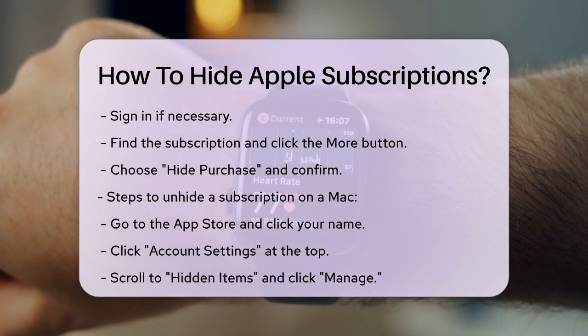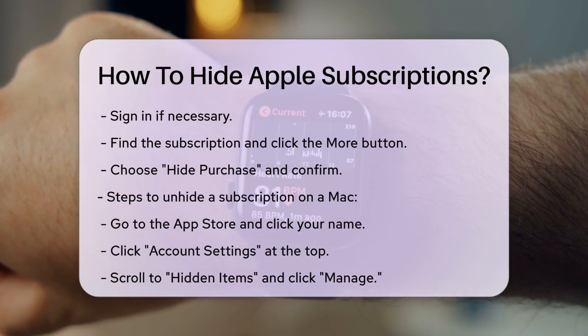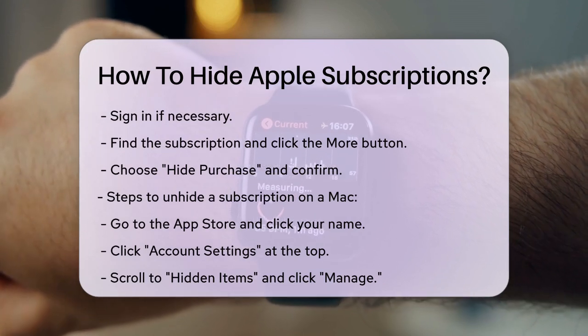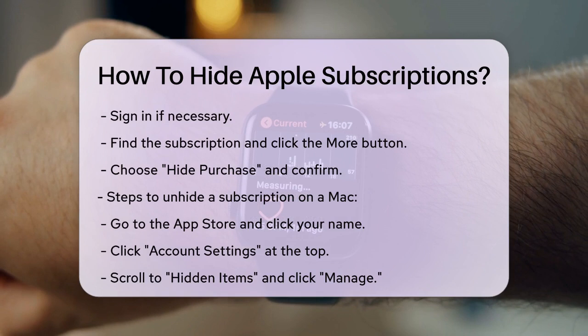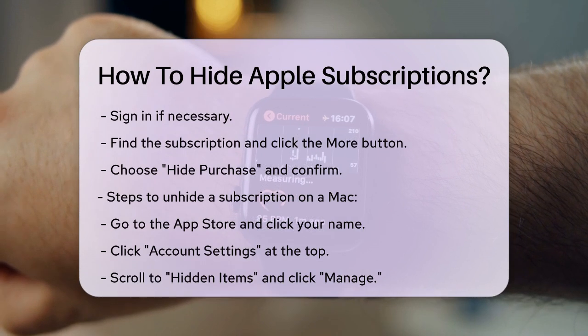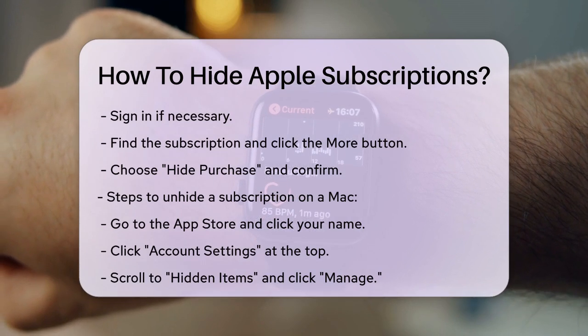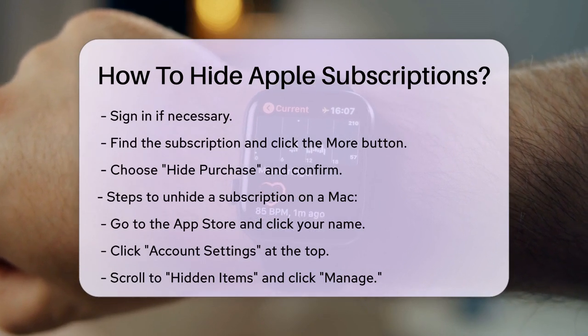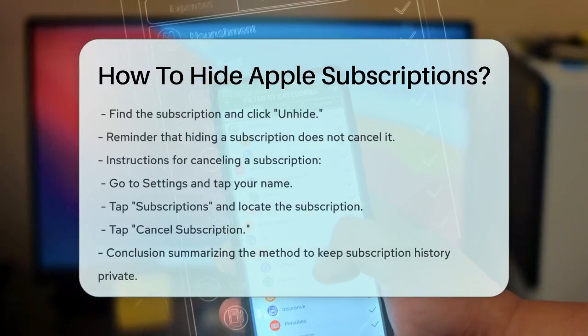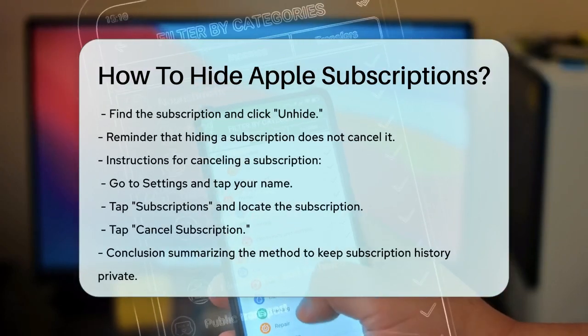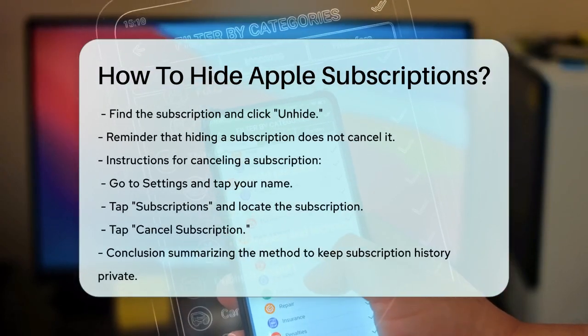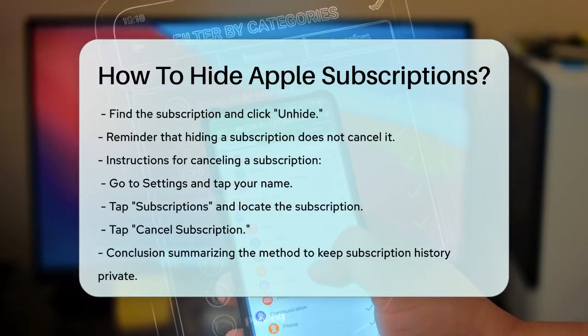Confirm by clicking Hide Purchase again. To unhide a subscription, go back to the App Store, click your name, then click Account Settings at the top. Scroll down to Hidden Items, click Manage, find the subscription, and click Unhide.